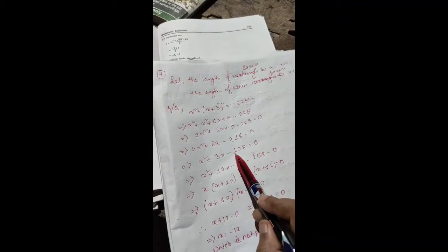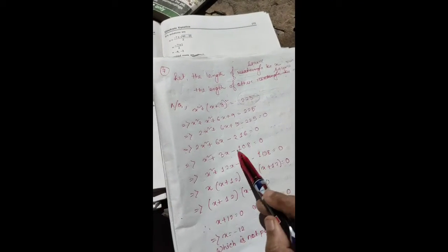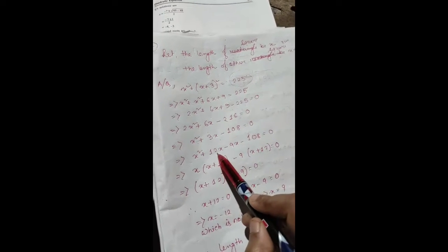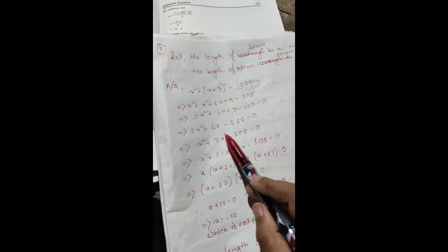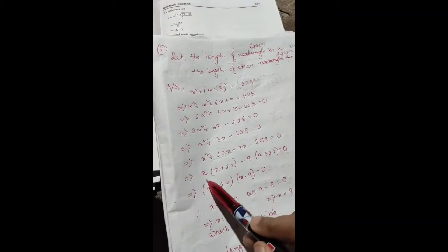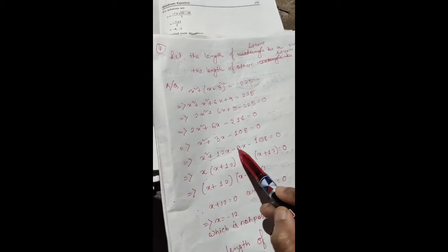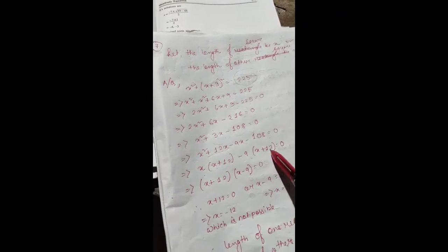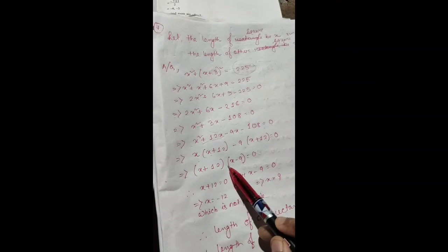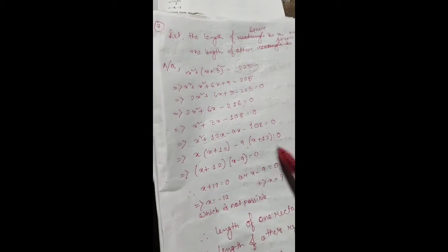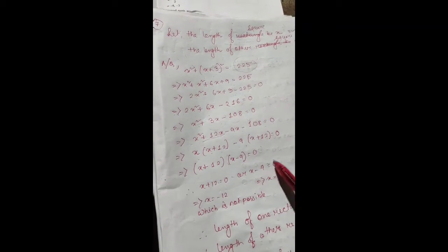108 can be factored as 12 times 9. So we get 12x - 9x. Taking x common from first two terms: x(x+12), and -9 common: -9(x+12). So either (x+12) = 0 or (x-9) = 0.